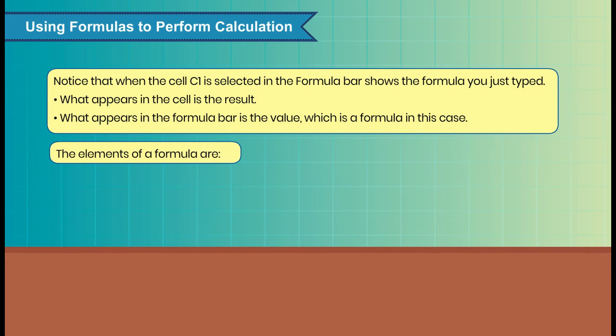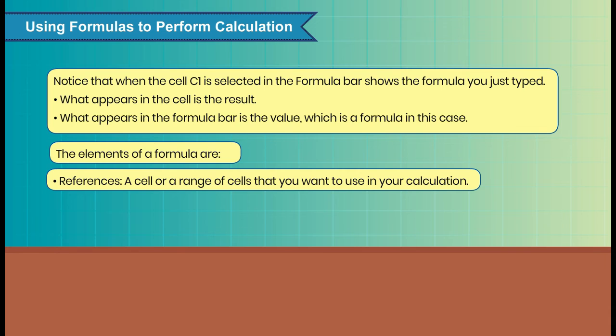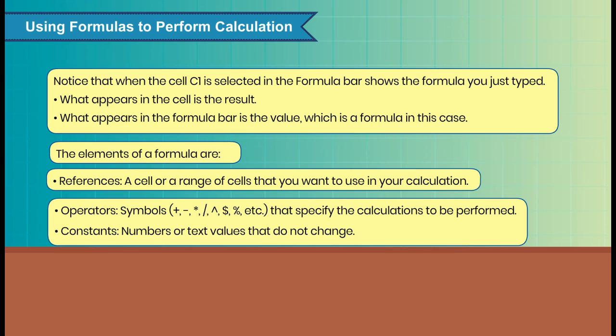The elements of a formula are: References - a cell or a range of cells that you want to use in your calculation. Operators - symbols like plus, minus, multiplication, divide by, exponentiation, dollar sign, percentage sign, etc., that specify the calculations to be performed. Constants - numbers or text values that do not change.